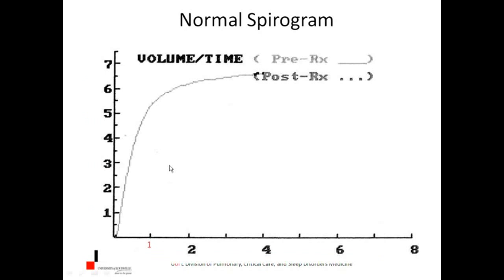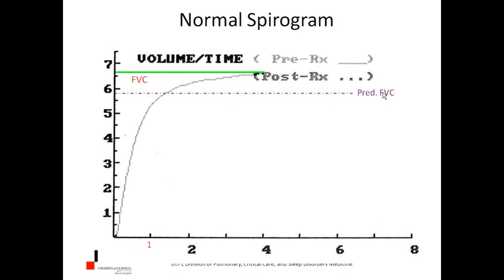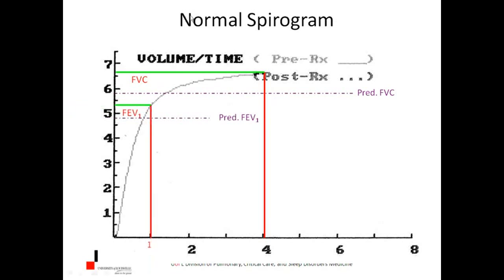Just a refresher on simple spirometry — this is from a healthy pulmonary fellow at Emory. He took a deep breath in and blew it out. On the y-axis we have volume in liters, on the x-axis we have time in seconds. His predicted forced vital capacity for his size, height, age, gender, and race is shown in purple — he actually did a little bit better than that. A healthy individual from a forced expiratory maneuver can get all the vital capacity out in three to four seconds.